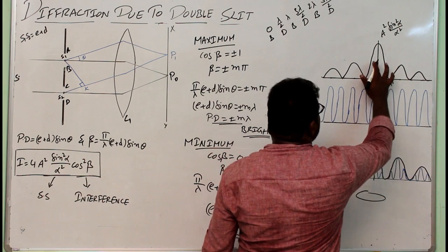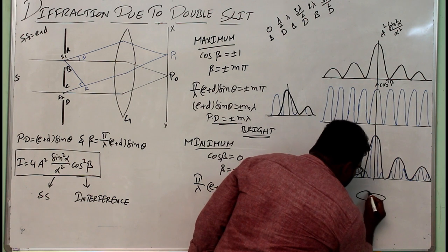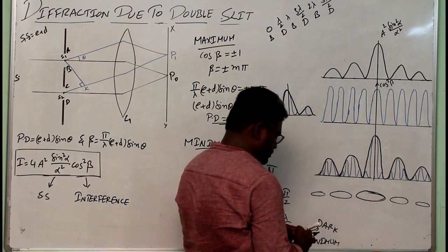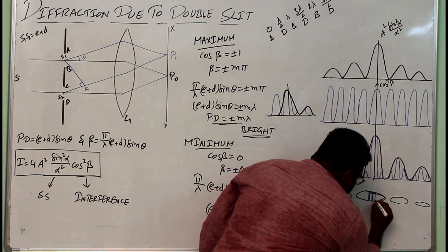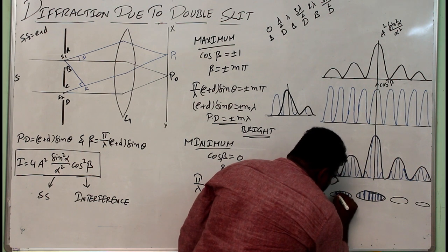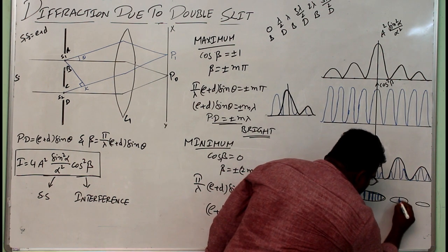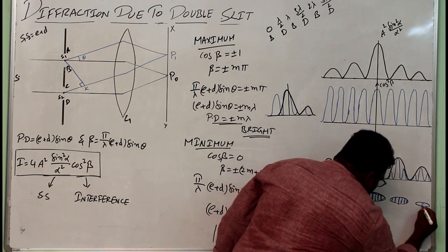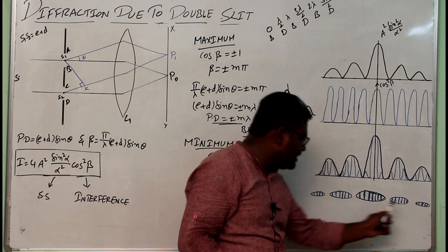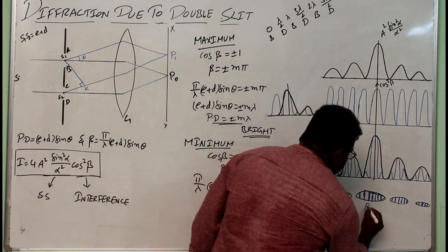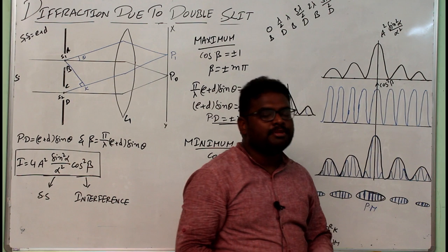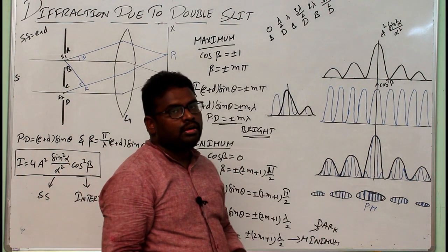On the screen you can observe: a central principal maxima with highest intensity, first secondary maxima and second secondary maxima on either side with decreasing intensity, with minimas in between. Within each diffraction maximum, alternating bright and dark interference fringes are visible. This is the complete double slit diffraction pattern — showing both single slit diffraction and interference together on the screen.